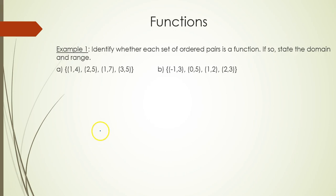Example 1: I give you a group of ordered pairs and I want to know if each set of ordered pairs is a function. If so, we will state the domain and range. Looking at part a, they give me four ordered pairs but notice (1,4) and (1,7) each have an x coordinate of 1. So 1 repeats as an x value.